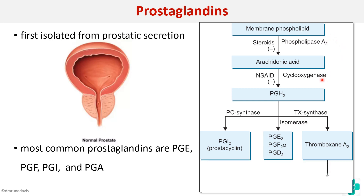Thromboxane A2 can also form thromboxane B2, which is another form of thromboxane. So to briefly summarize the synthesis of prostaglandins, the most common prostaglandins are PGE2, PGH2-alpha, PGD2, PGI2, and thromboxane A2.